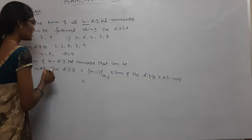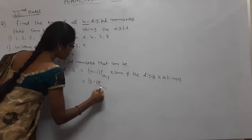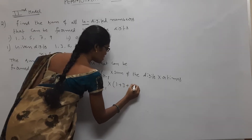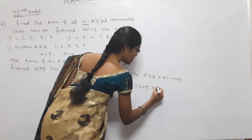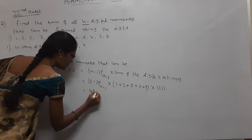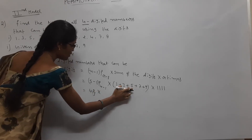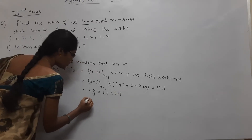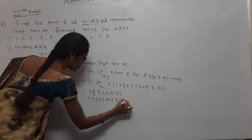Substitution: n minus 1 — what is n? 5. So 5 minus 1, P, r minus 1 is 4 minus 1, into sum of the digits. That gives 4P3. The sum of the digits: 1+3+5+7+9 = 25. So it is 4P3 into 25 into 1111.